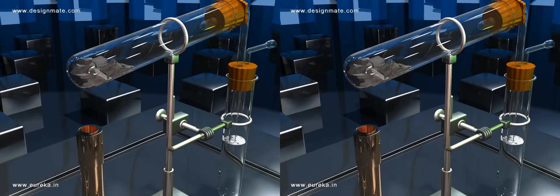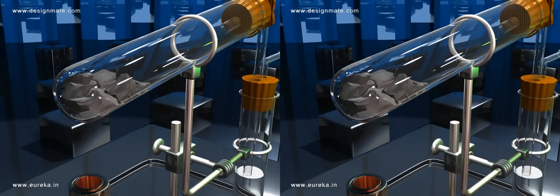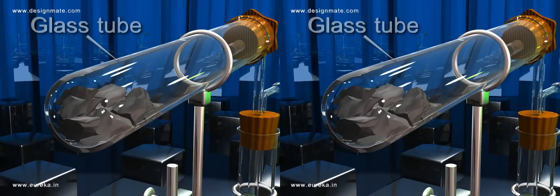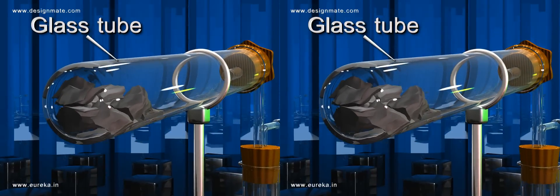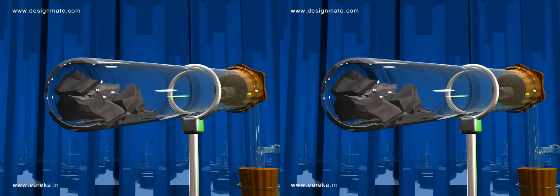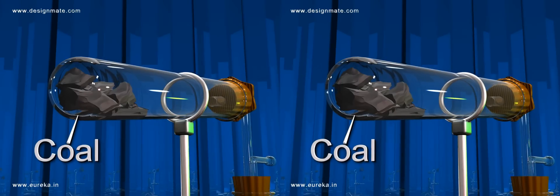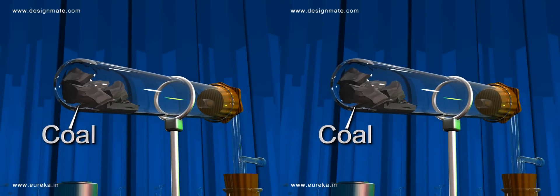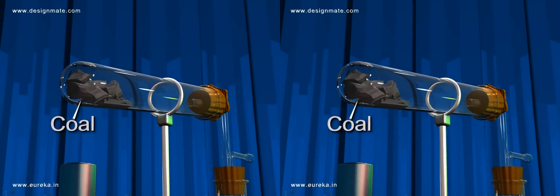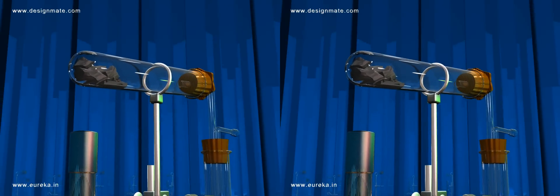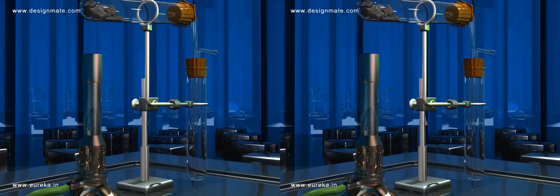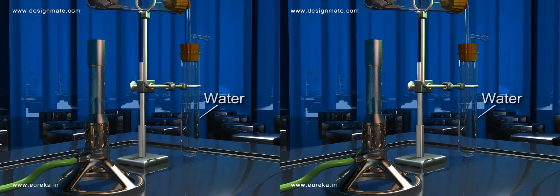Arrange the apparatus as shown. The horizontal glass tube contains some crushed pieces of coal, while the vertical glass tube is filled with some amount of water.